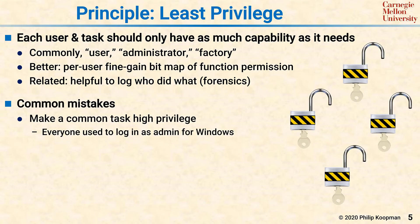Making a very commonly used task high privilege. If there's something that everyone who uses the system needs to do, and that something requires a Windows admin password or a Unix root password, then everyone ends up being admin or root, and you have no least privilege. Everyone has complete access, which means if their account is stolen, the attacker can subvert the system, or a simple user mistake can do immense damage.